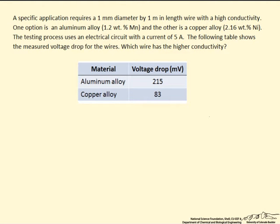This screencast will introduce the topic of electrical conductivity through a short example where we examine the electrical properties of two different materials. Let's say you have a specific application that requires a 1 mm diameter by 1 m length wire that has a high conductivity. You have the option of an aluminum alloy and the other option is a copper alloy.